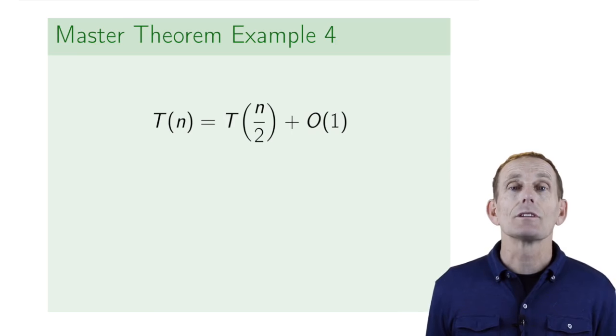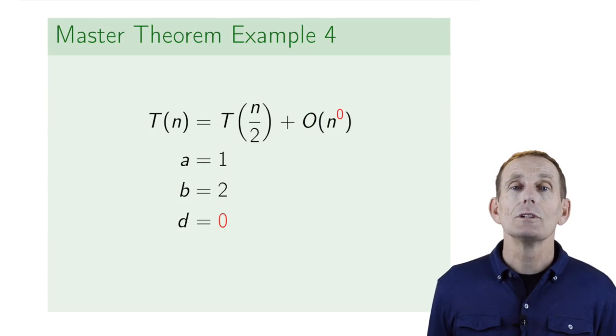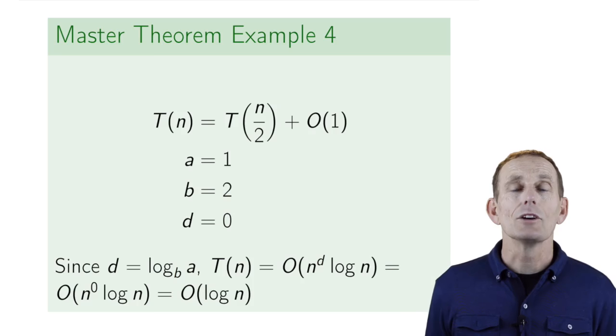And now this shows an example also of case 2. So this is the binary search example. a is 1, b is 2, d is 0. Well, the log base 2 of 1, log base b of a, is equal to 0. So d is equal log base b of a. We're in case 2. T(n) equals big O of n to the d log n, which is n to the 0 log n, which is just big O of log n.